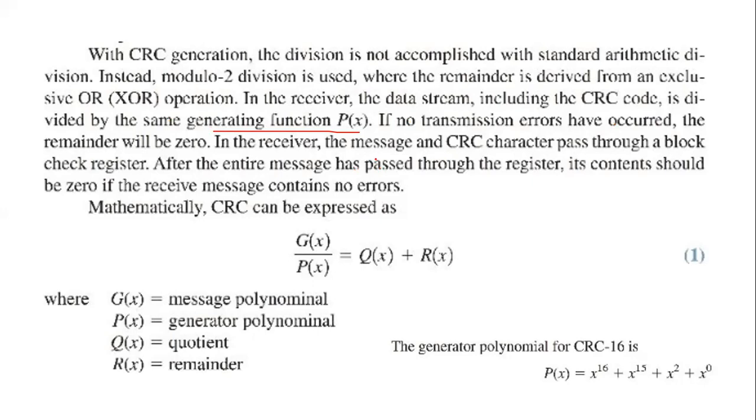In the receiver, the message and the CRC character pass through the block register. After the entire message has passed through the register, the content should be 0 if the received message contains no error.